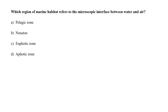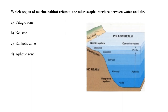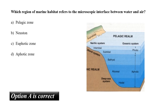Which region of the marine habitat refers to the microscopic interface between water and air? Options are: A. Pelagic zone, B. Neuston, C. Vortex zone, D. Vortex zone. We will refer to a diagram of the different zones in the marine habitat. The layer that separates the water from air through an interface is the pelagic realm. It separates water and air. So here the correct answer is option A.